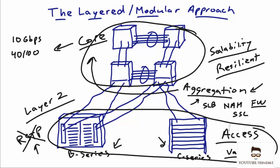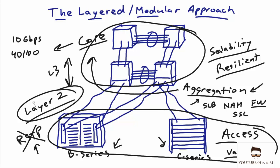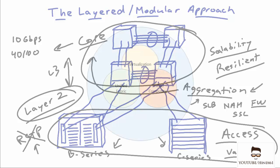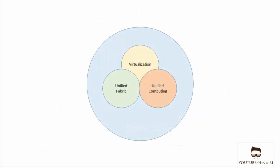A collapsed core can be done with Layer 3 throughout, or with a mix of Layer 3 and Layer 2 — Layer 3 traditionally done in the core and Layer 2 at the access layer. In both local area network and storage area network designs we can go with a collapsed core approach. When you hear collapsed core, think of just that two-layer core and access design.